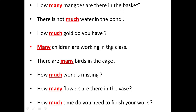Many children are working in the class — children are countable. There are many birds in the cage — birds are countable. I want to tell you here that 'children' is plural, and if you are having one small kid, you say 'child.' Child is singular and children is plural — we don't say 'childrens.' How much work is missing? Work is uncountable. How many flowers are there in the walls? Flowers are countable. How much time do you need to finish your work? Time is uncountable because you can count the hours, but time itself is uncountable.